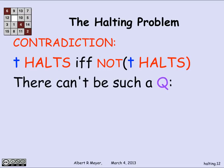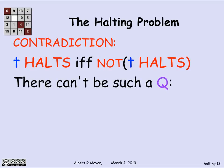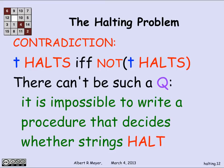That contradiction shows that our original hypothesis — that there was a q that could decide the halting problem — can't be right. It's impossible to write a procedure that determines of strings whether they describe a procedure that halts when applied to itself. That at least gives us a concrete problem that we can say is not something a computer can do, even though it's a very well-defined and clear question. Any program trying to do this job will either give the wrong answer, or if it never gives a wrong answer, it doesn't give an answer at all on some strings.